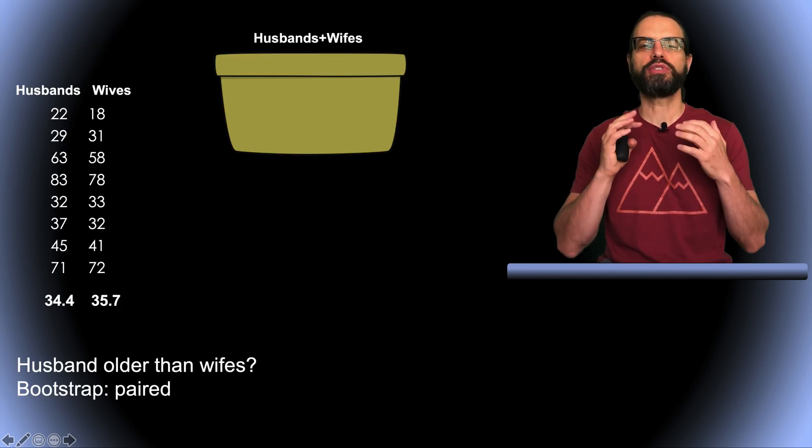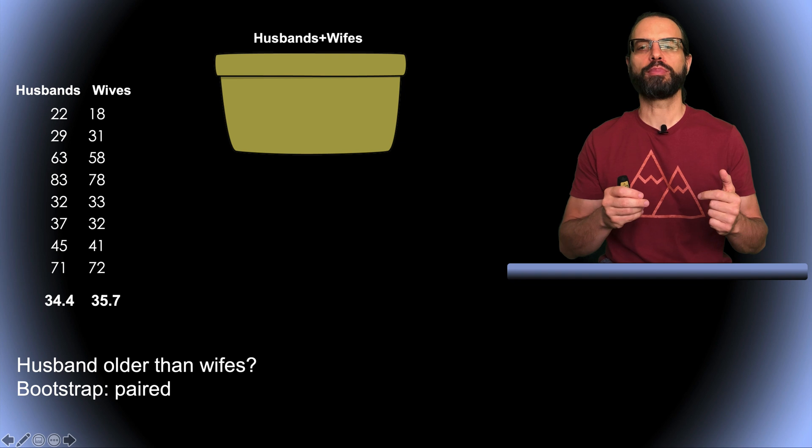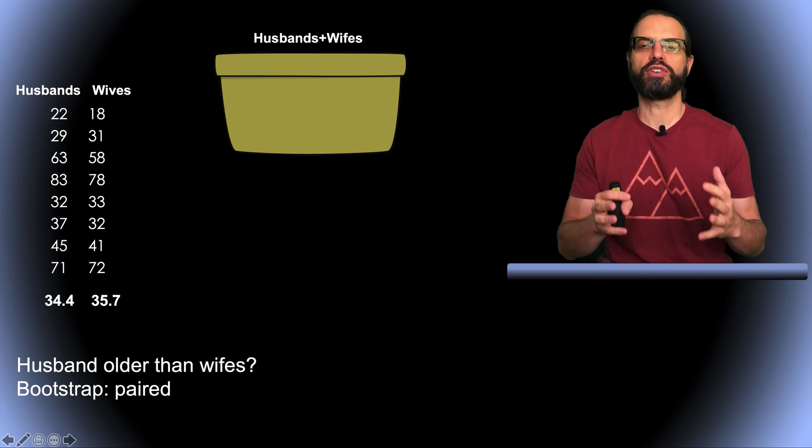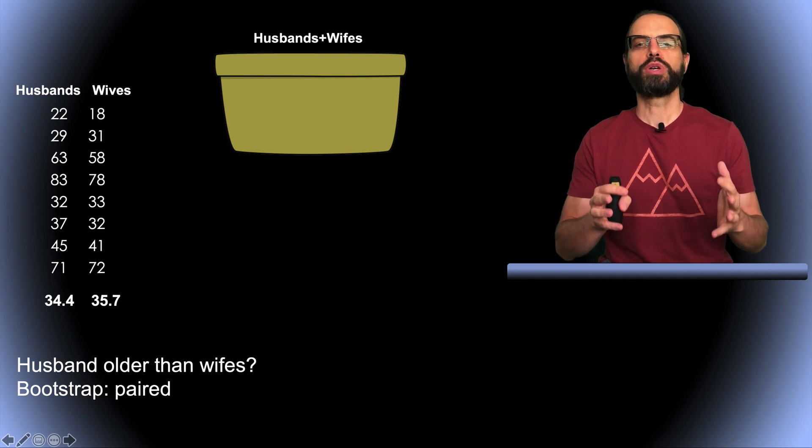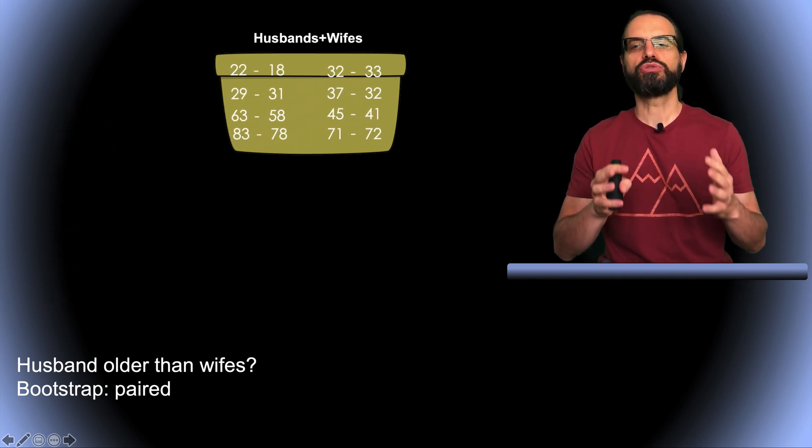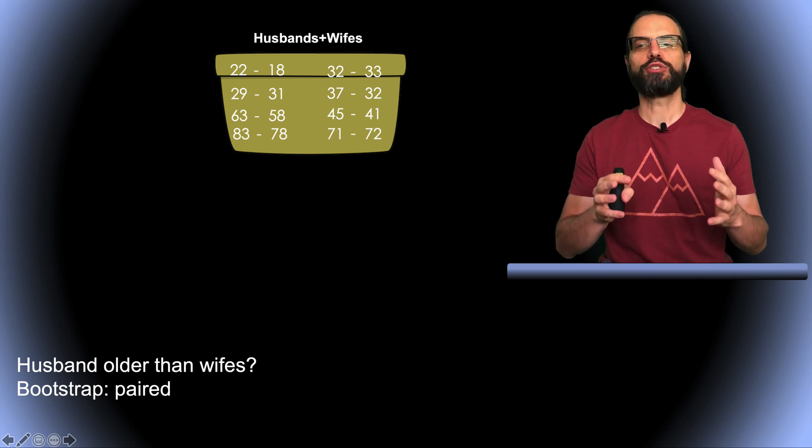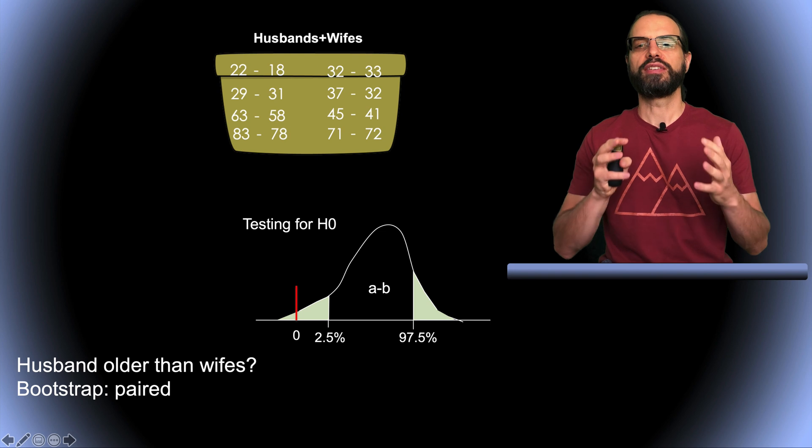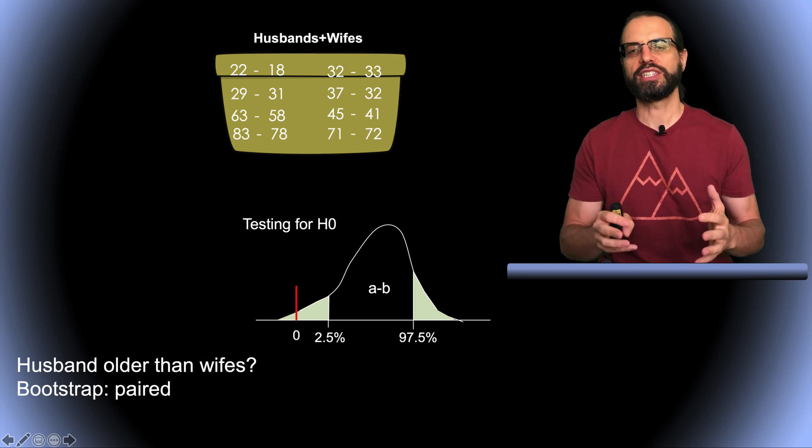Let's quickly review that with a concrete example where we just want to determine if husbands are older than their wives. For bootstrap, we put all the age differences in the big bucket and we randomly draw eight values. Then we calculate the mean repetitively to create the mean difference distribution. If zero lies in the tail, then the difference is significant.